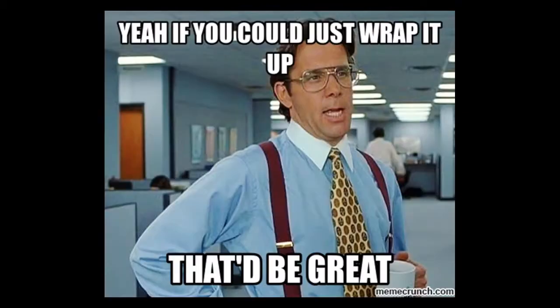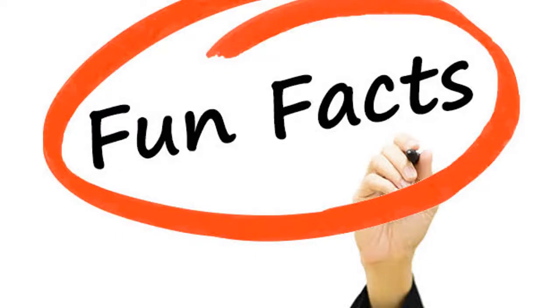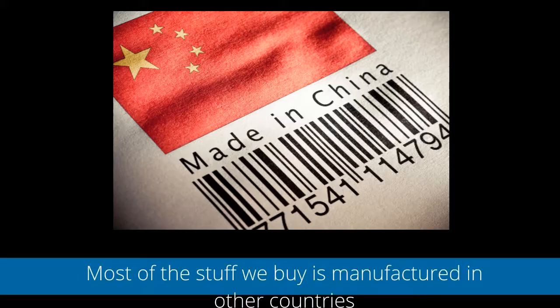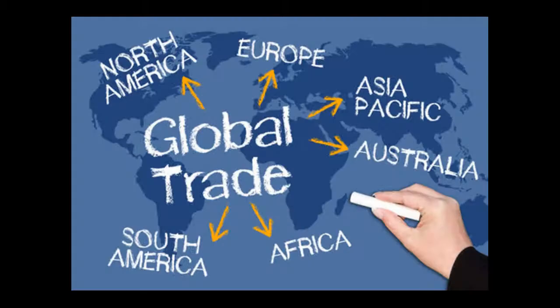Here are a few fun facts about globalization. Number one: most of the stuff we buy is manufactured in other countries. A lot of the products, food, and media we consume comes from outside Canada. This is because of global trade — Canada exports a lot of resources to other countries, and they manufacture the products that we import and buy. We will be exploring the positive and negative effects of global trade later this semester.